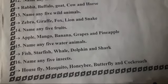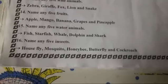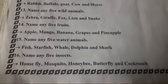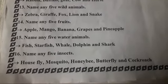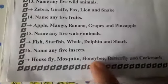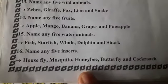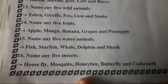Name any five insects. Insects yani jo jeev jantu hote hain, machar hote hain, unhe kya bolte hain? Insects. Toh woh kaun kaun se aayenge — housefly, mosquito, honeybee, butterfly and cockroach.